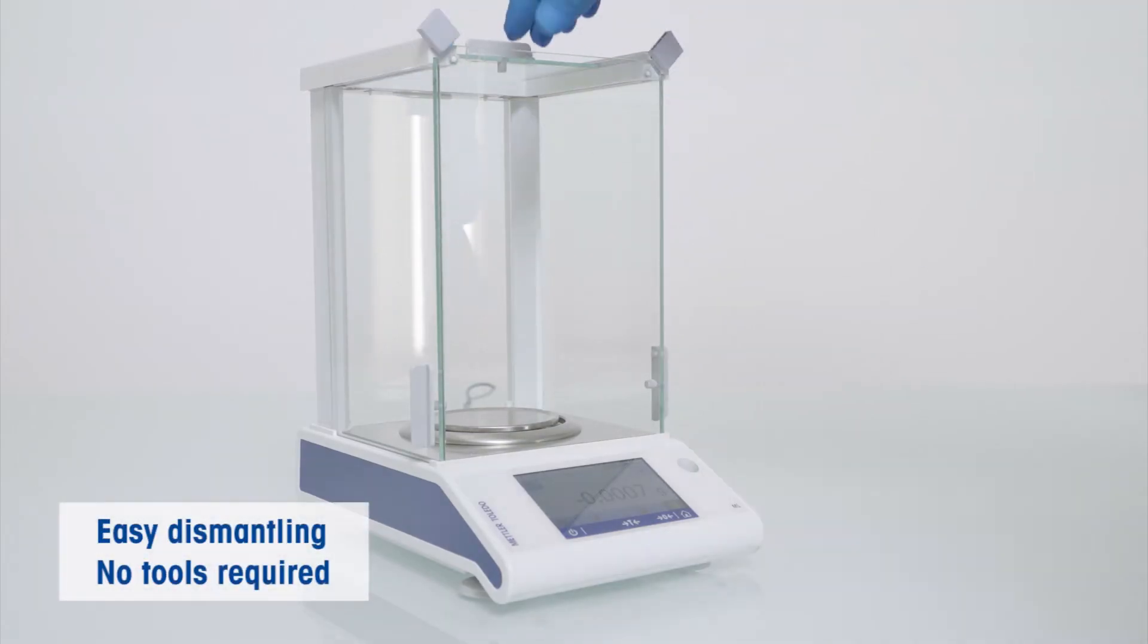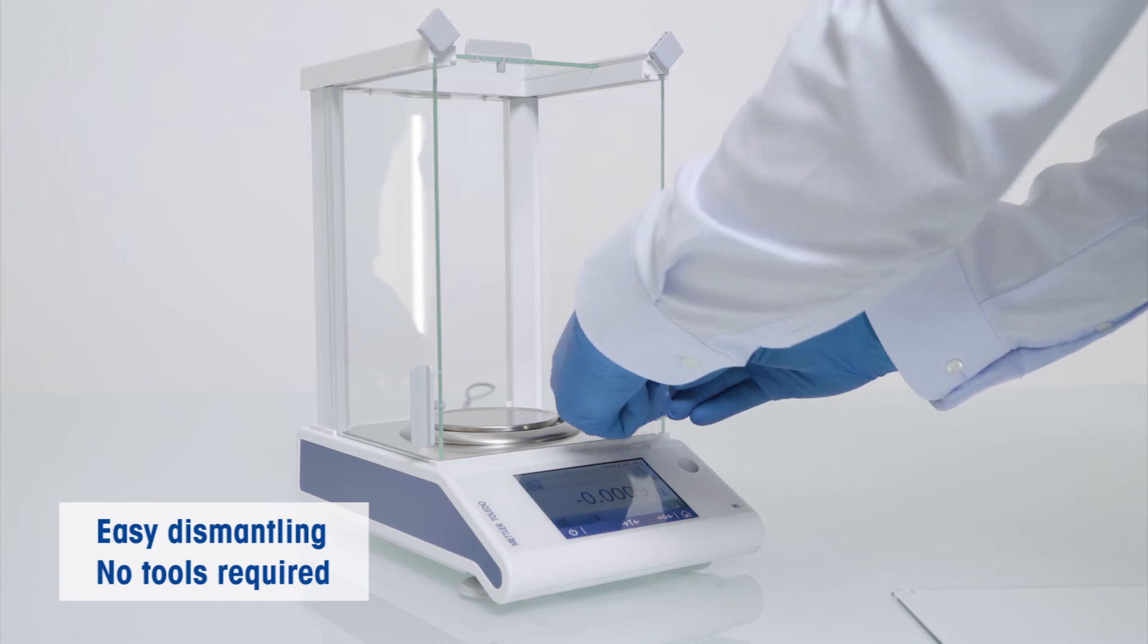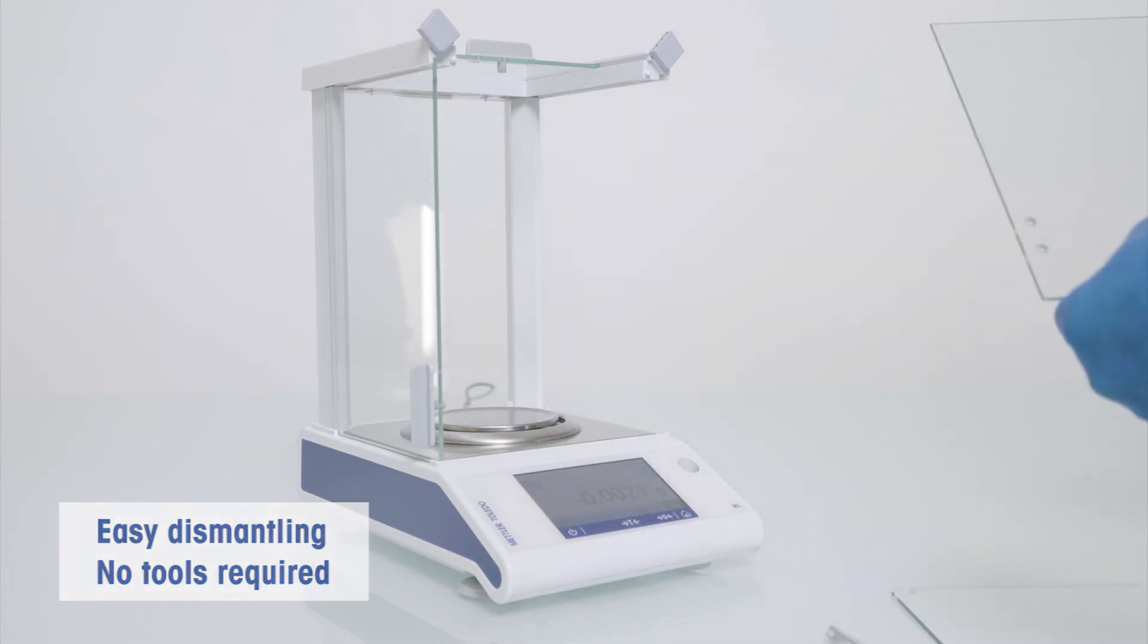The surfaces are large and flat, and the draft shield panels can be easily removed without any tools, which makes them easy to clean.